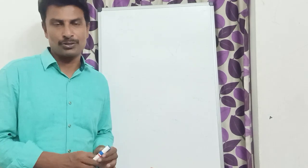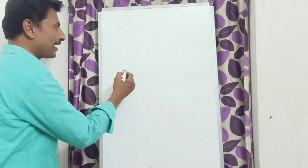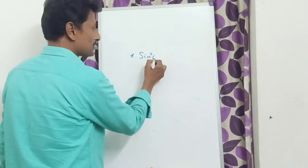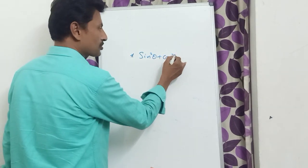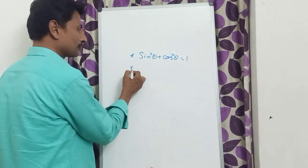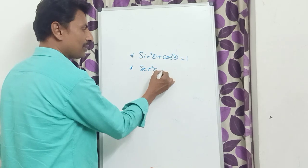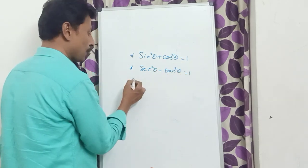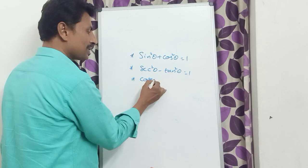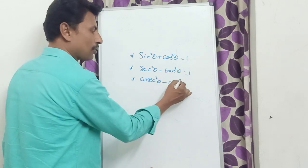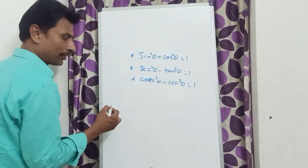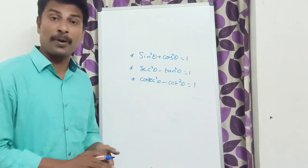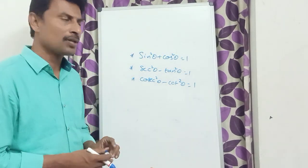We know there are three identities in trigonometry: sin²θ + cos²θ = 1, and sec²θ − tan²θ = 1, and cosec²θ − cot²θ = 1. These are the trigonometric identities, also called Pythagorean identities. For all values of theta, we get the answer 1.